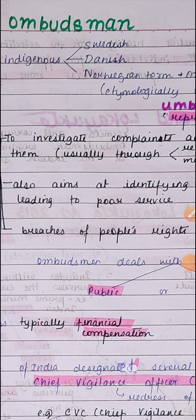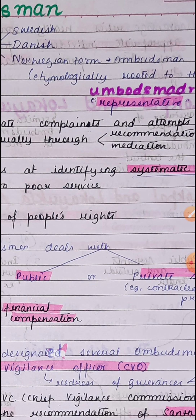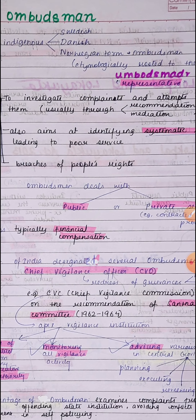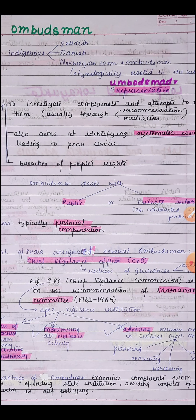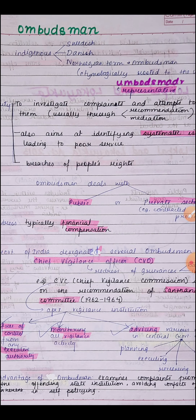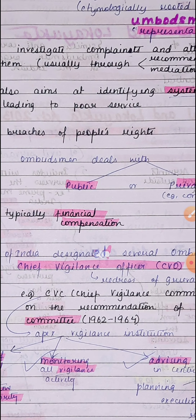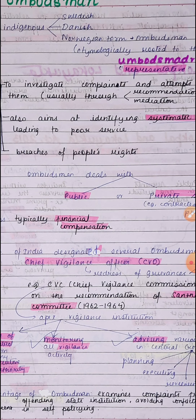Ombudsman comes from the indigenous Swedish, Danish, and Norwegian term meaning 'representative.' It settles disputes, investigates complaints, and attempts to resolve them usually through recommendation and mediation. It also aims at identifying systematic issues leading to poor services and breaches of people's rights. Ombudsman settles disputes in the banking and insurance sector. We also have Lokpal and Lokayukta — similar anti-corruption ombudsman organizations at the central and state levels, investigating corruption by ministers and public servants. Ombudsman typically gives financial compensation to the aggrieved party.